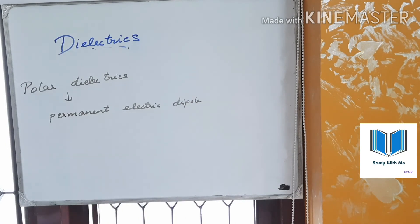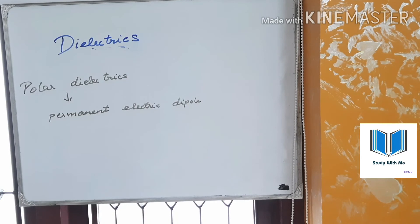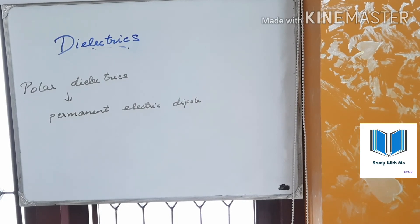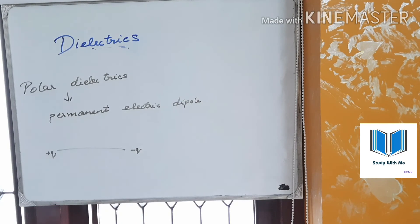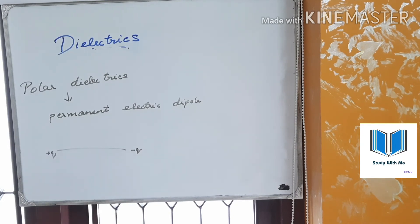Polar dielectrics have permanent electric dipoles. The concept of dipoles in dielectrics relates to positive and negative charges. These electric dipoles are formed of atoms and molecules.